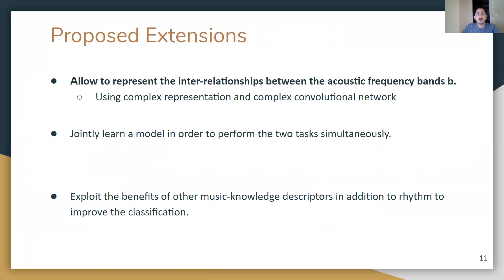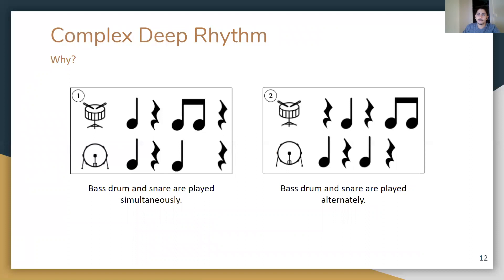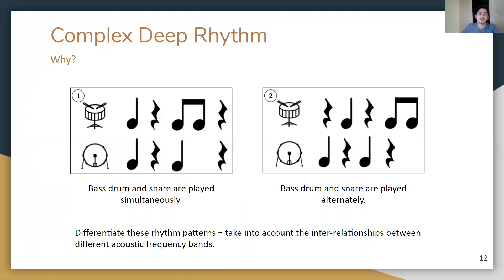For the first extension, we want to allow the model to take into account the interrelationships between the different acoustic frequency bands. Given two different rhythm patterns, in the first one bass drum and snare are played simultaneously, and in the second they are played alternately. In our H-CQM representation, those two patterns are considered the same since the H-CQT of each acoustic frequency band is computed individually. To differentiate those patterns and allow better tempo estimation, it is important to take into account the inter-band relationships.